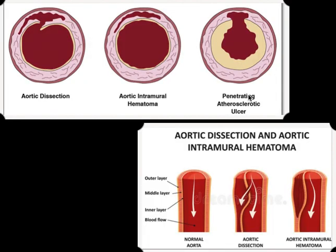Another important differential diagnosis to remember is acute intramural aortic hematoma as well as penetrating atherosclerotic ulcer. These are two differentials which are very important to keep in mind when there is an aortic dissection. This diagrammatic representation shows aortic dissection versus acute intramural hematoma — always try to see whether the intimal layer is intact or not and whether it is progressing, and identify all the signs of true and false lumens in case of aortic dissection.